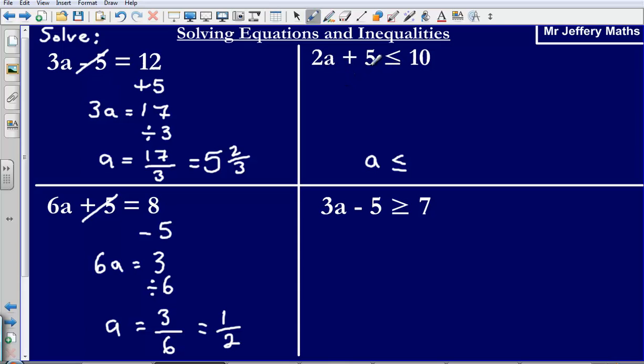So it says here 2A plus 5 is less than or equal to, that line underneath means it can be equal to it as well, 10.